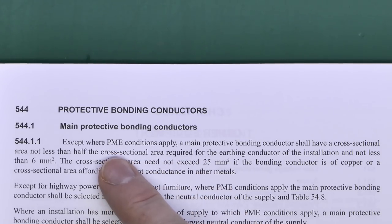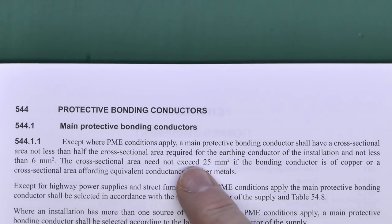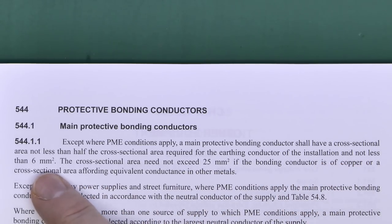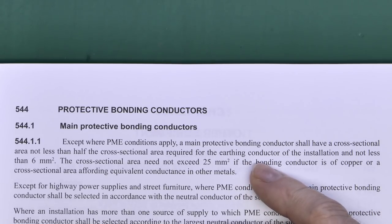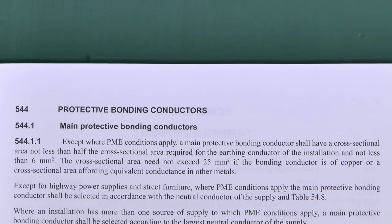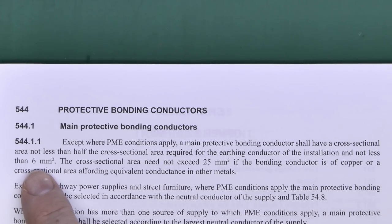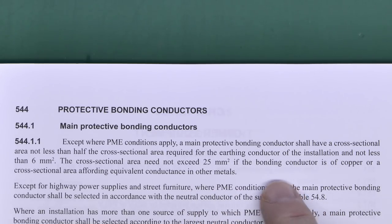Regulation 54411 states that except where PME conditions apply, the main protective bonding conductor should have a cross-sectional area of not less than half the cross-sectional area required for the earthing conductor of the installation, and not less than 6mm² in any case. So if you've got a 16mm² earthing conductor, half of that is 8mm², which is more than 6mm², so 8mm² would be fine. But in reality you can't buy 8mm², so it usually ends up as 10mm². It need not exceed 25mm² if made of copper.